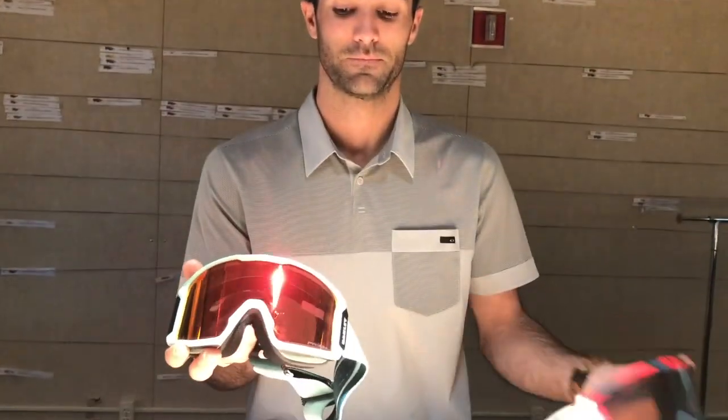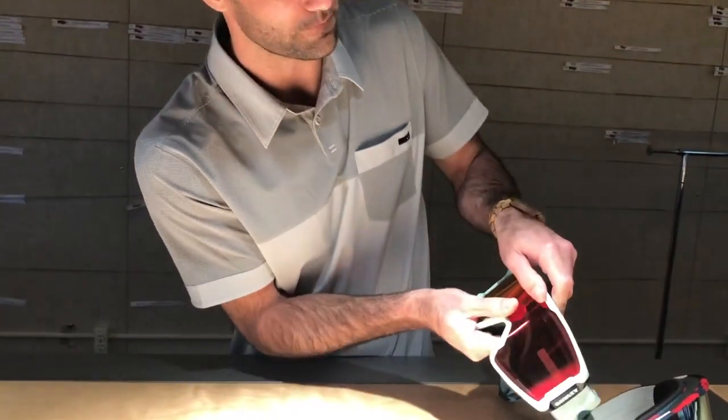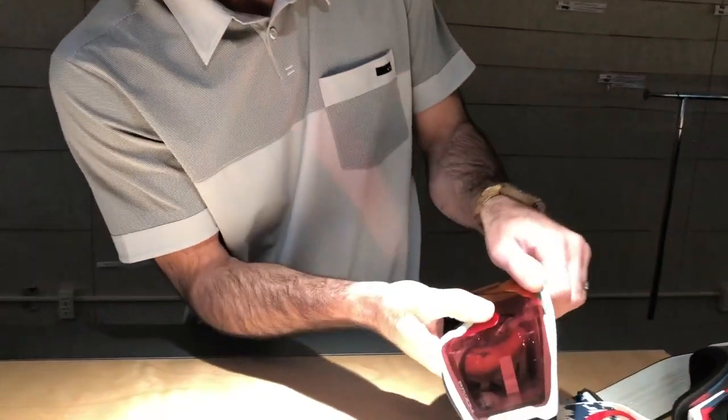Okay, so very simply on the Two Line goggles, I'm gonna show you how to swap out the lens. We're gonna start from the top. It might be a little lodged in there, but you just push up and it'll pop right out.